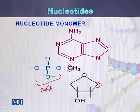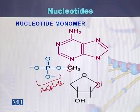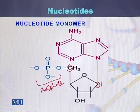These three components — nitrogenous base, phosphate group, and pentose sugar — collectively are called a nucleotide.